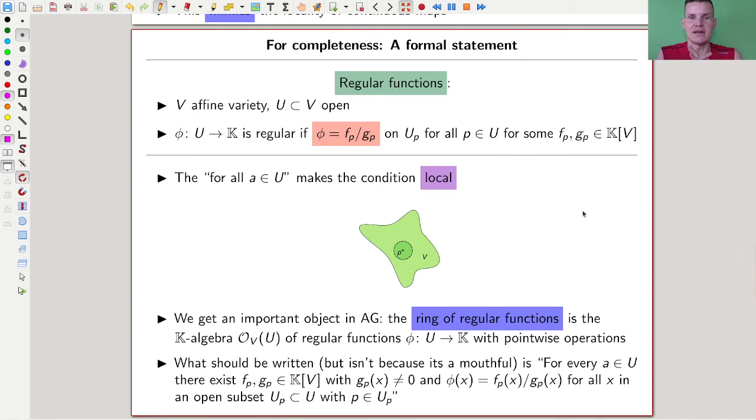So a regular function is, we have some f on a variety and we have some open subset. A function to the ground field is regular if it's f divided by g, where f and g are polynomials, for all neighborhoods. There's a neighborhood for every point such that they are local. So f and g depend on the point.